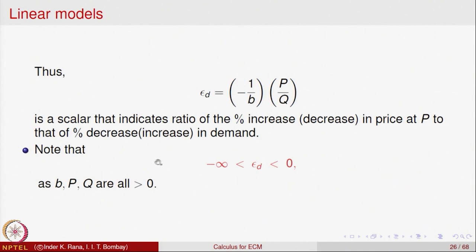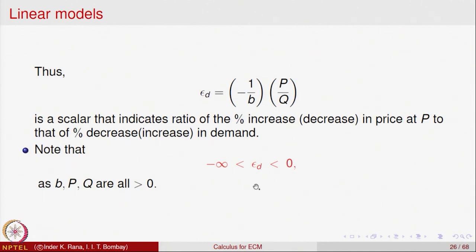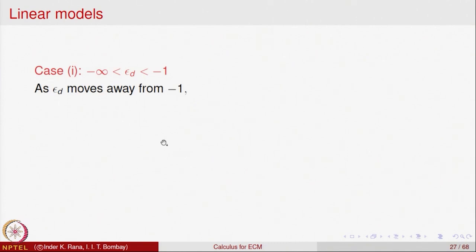Observing that price P is always positive, quantity demanded Q is always positive, and B in the equation is positive, it follows that epsilon D is always a negative quantity lying between minus infinity and 0.